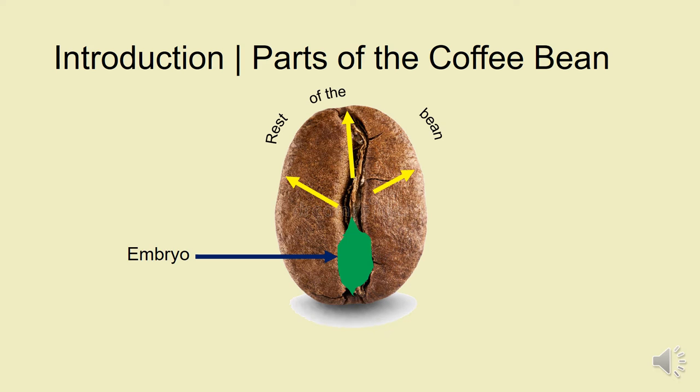The coffee bean, basically, is a seed of a plant. It has the embryo where the plant will grow from if you plant it. In the study, we looked at the embryo, which is the central part of the seed versus the rest of the bean, which is all the other parts. It doesn't include the embryo.